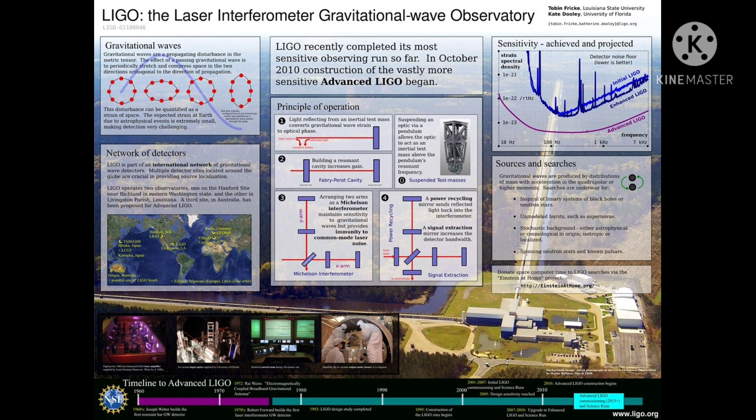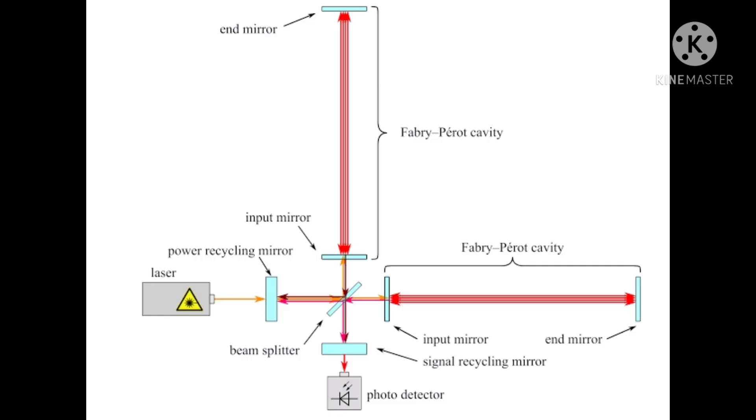When a gravitational wave passes through the interferometer, the distances along the arms are shortened and lengthened, causing the beams to become slightly less out of phase. This results in the beams coming in phase, creating a resonance. Hence some light arrives at the photodiode, indicating a signal.